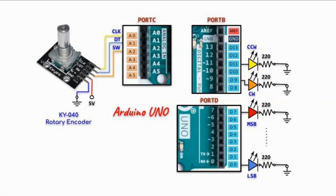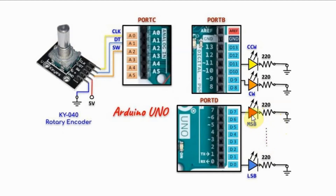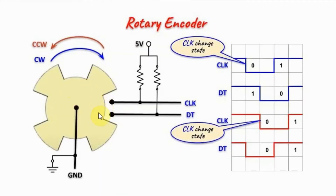A circuit diagram of the implemented system is shown here. The rotary encoder KY040 is interfaced with the Arduino through port C, with the clock line on PC0, data line on PC1, and the switch on PC2. As we turn the encoder clockwise, the incremented count value is displayed on eight LEDs connected to port D, and the clockwise LED will be on. Counter-clockwise rotation decrements the count and turns on the counter-clockwise LED. Note that each rotational click causes the count to increment or decrement twice, since the clock state changes twice per click.